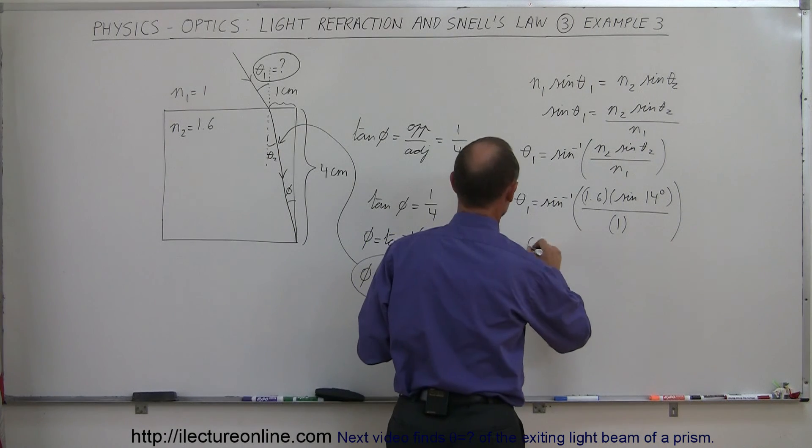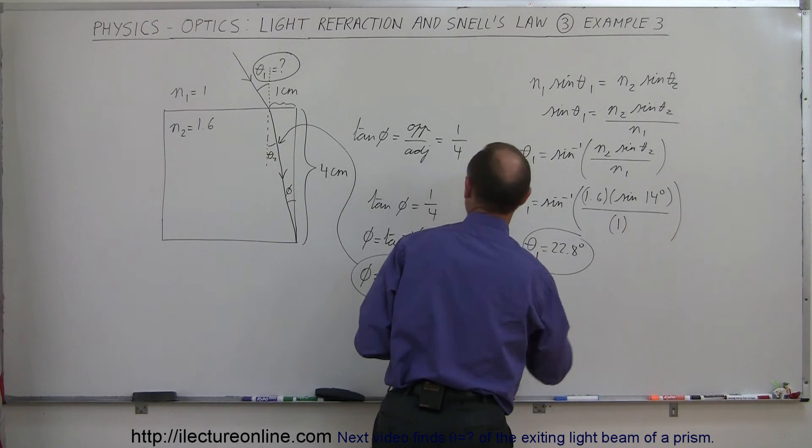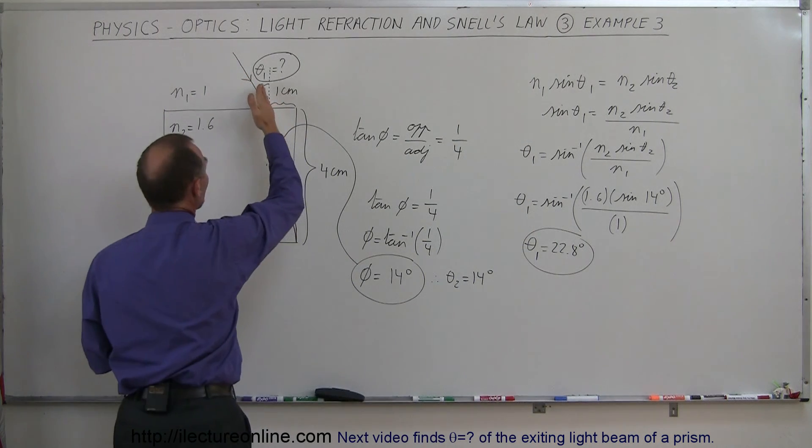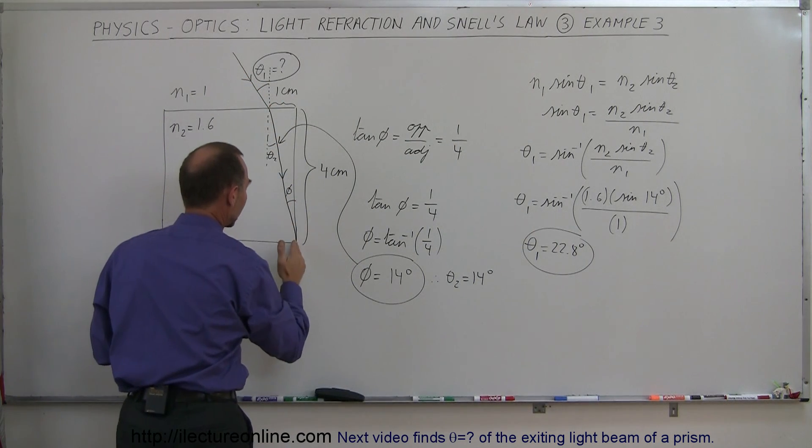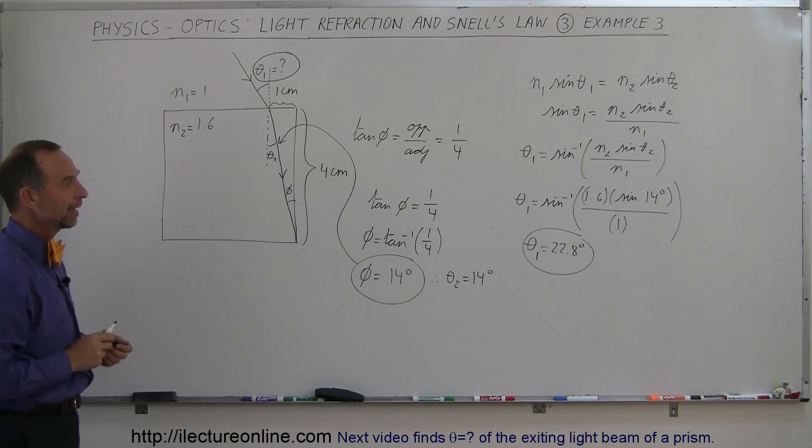So the incident angle, theta1, must be 22.8 degrees in order for that beam of light, as it enters the cube, to hit the corner of the block of glass right there at the very bottom. And that's how we do that.